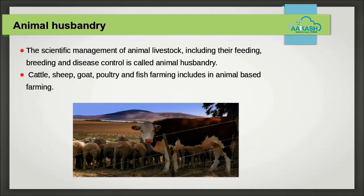Animal farming or animal husbandry requires planning for domestic animal shelter, breeding, health, disease control, and proper economic utilization. The expanding population and scaling demands have resulted in limitations in livestock breeding, and therefore there is a need to improve these techniques.